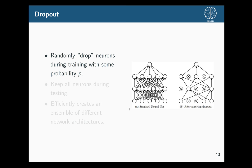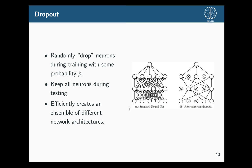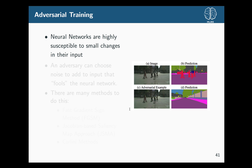Dropout randomly drops neurons in your network during training, essentially creating an ensemble of many different networks because each training pass has a slightly different architecture. This efficiently creates an ensemble without training each network separately. During test time, you don't drop out — the network architecture is stable and set.